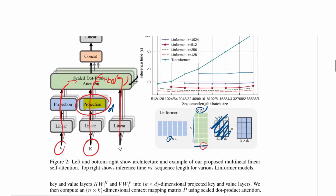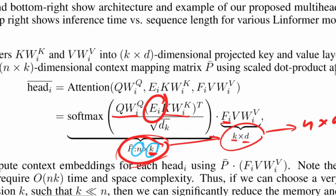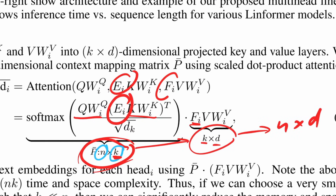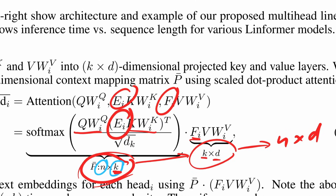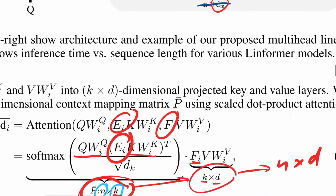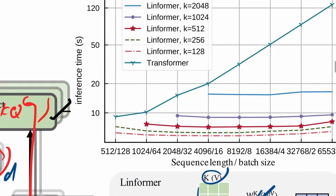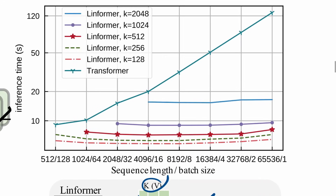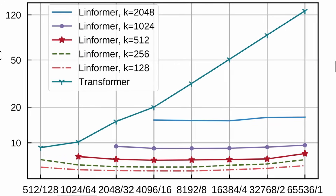They build this into the transformer. As I understand it, these projection matrices are not learned — they are constructed in the Johnson-Lindenstrauss prescribed way, fixed once, and that's that. So there are no additional learnable parameters.